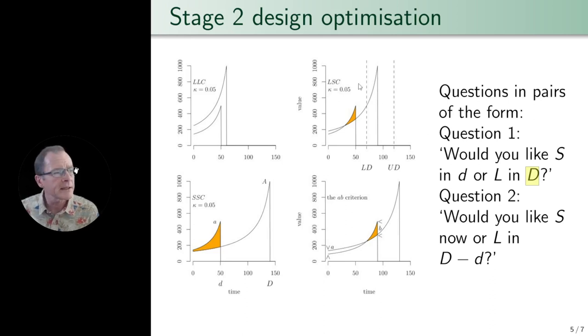For the LSC questions, we're expecting to see preference reversals in the top left and the bottom right. We've got an illustration of the LLC and the SSC condition. In the LSC condition, we expect both questions to result in choices for the later reward. And in the SSC condition, we expect both questions to result in choices of the smaller reward.